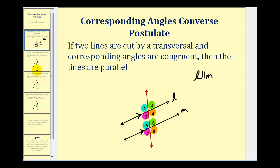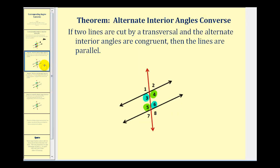Now we'll state the three most common theorems that follow from this postulate. The first one is the alternate interior angles converse. This tells us that if two lines are cut by a transversal and the alternate interior angles are congruent, then the lines are parallel.